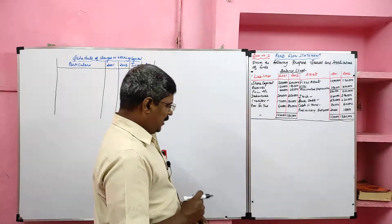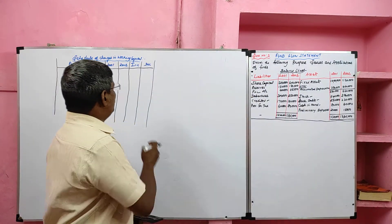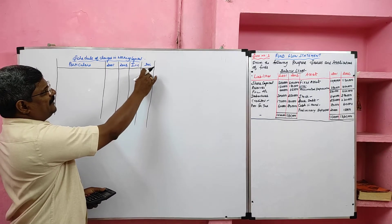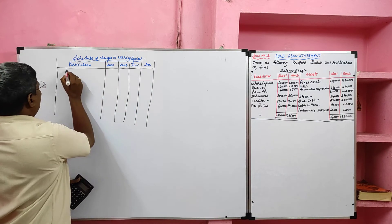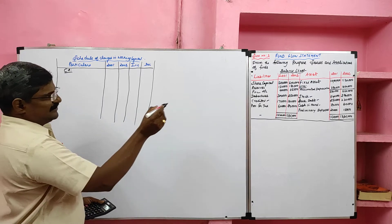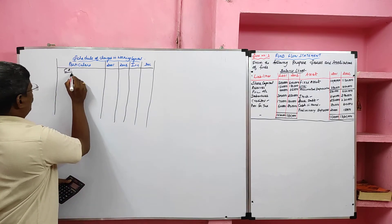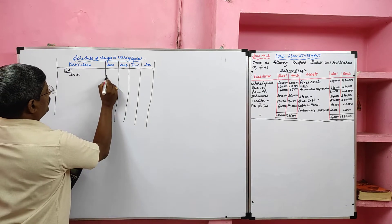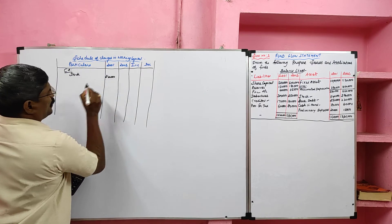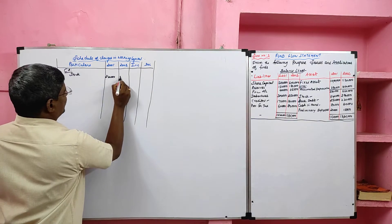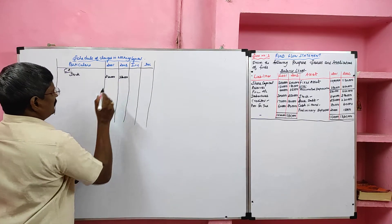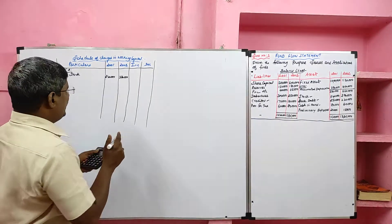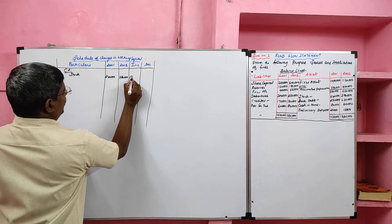Now we are going to prepare the schedule of changes in working capital. Columns are: Particular, 2001, 2002, Increase in Working Capital, Decrease in Working Capital. We'll take current assets first. The first current asset is stock, with opening value 2,40,000.